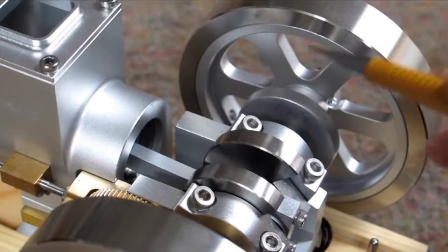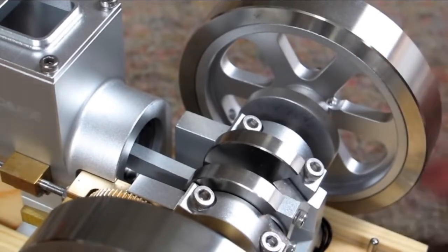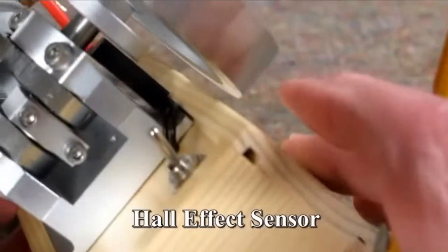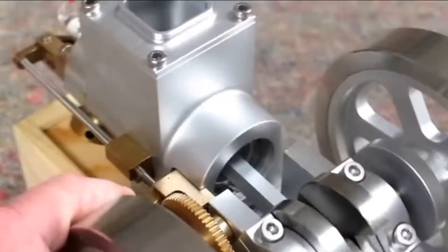The timing of the ignition spark is caused by a magnet that's pressed into the back side of this disc. And that magnet comes around and passes in front of this Hall effect sensor, which triggers a spark to the spark plug.